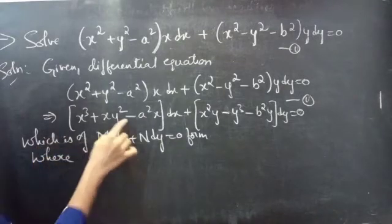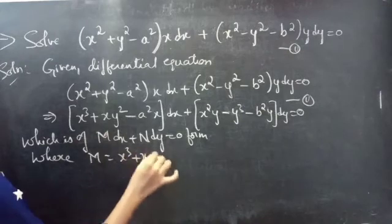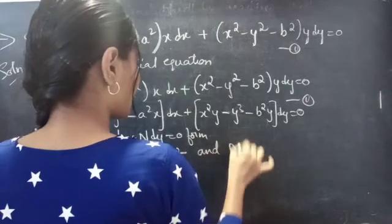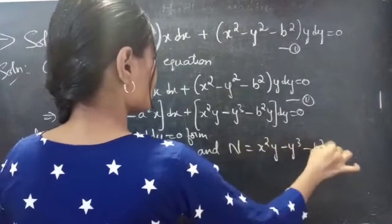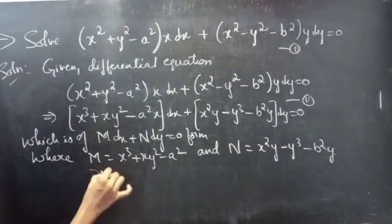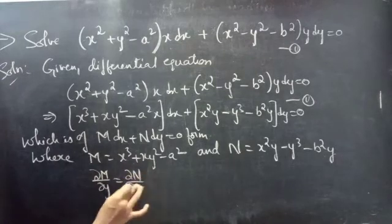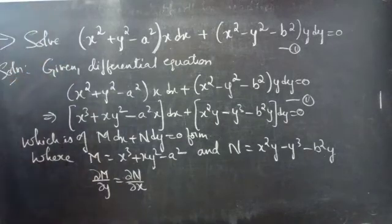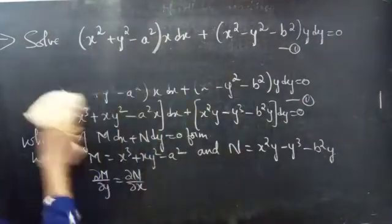By comparing these two, we get M = x³ + xy² - a²x and N = x²y - y³ - b²y. If the partial derivative of M with respect to y equals the partial derivative of N with respect to x, then the given differential equation is an exact equation. So let's find ∂M/∂y and ∂N/∂x.